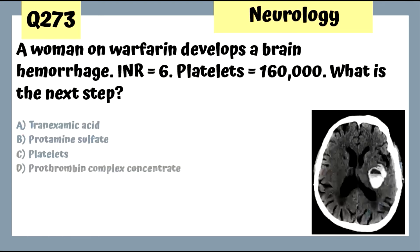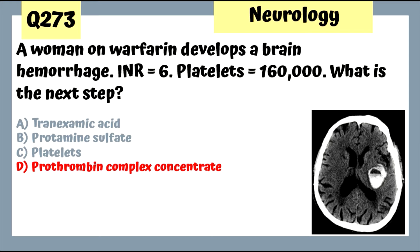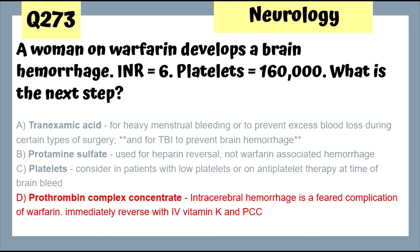Question 273: A woman on warfarin develops a brain hemorrhage with INR 6 and platelets at 160. The next step is to give PCC — prothrombin complex concentrate — to reverse warfarin. Immediately reverse with IV vitamin K and PCC.